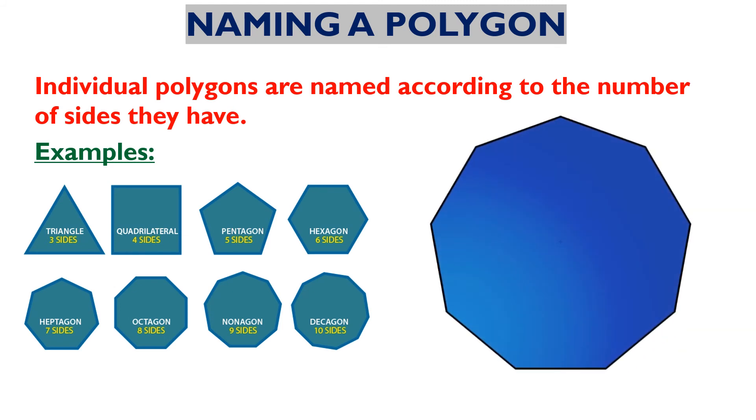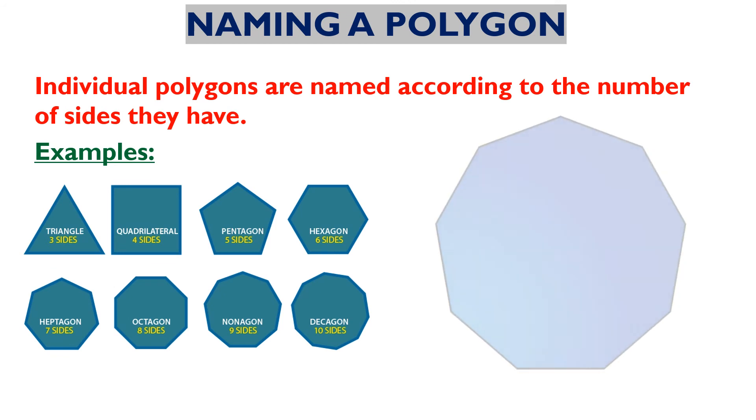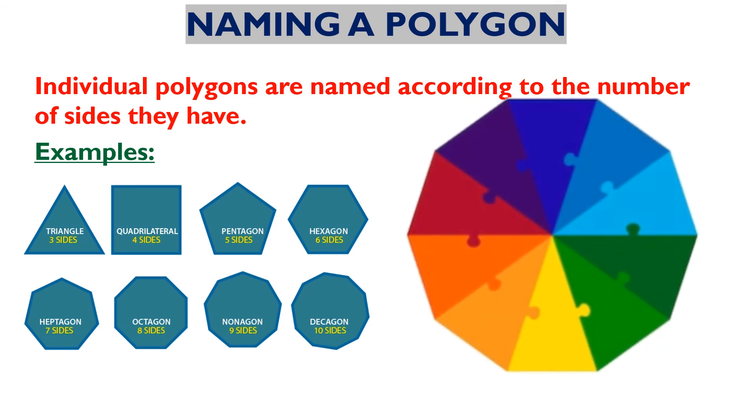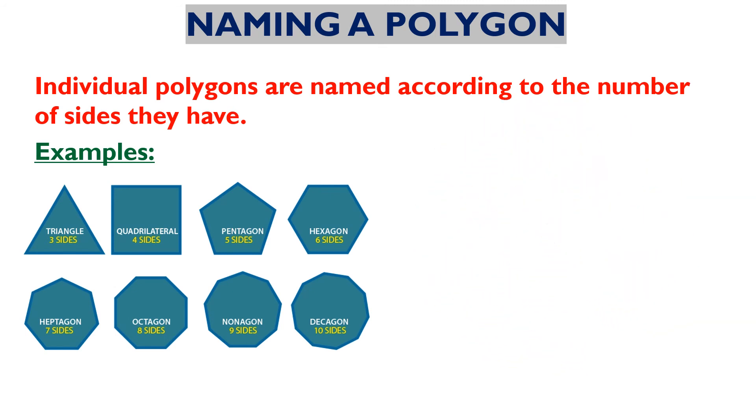And nonagon with nine sides and nine vertices. And decagon with ten sides and ten vertices. And so on.